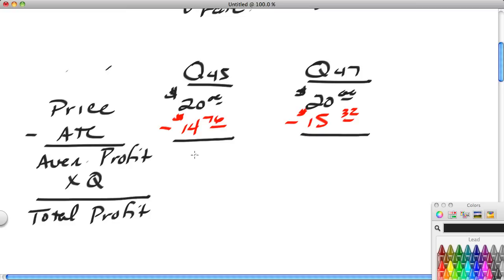So let's go ahead and put in our cost. The average total cost for producing 45 units, taken directly from the table we developed in our last lesson, is $14.76. The average total cost of producing 47 units, if you recall, is $15.32. So what is our average profit? If we take the 20, subtract $14.76, we're going to get $5.24. The average total cost over here is going to be $4.68. Now if we take these averages and we multiply them by their corresponding queues, we're going to get the total profit.